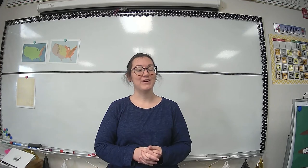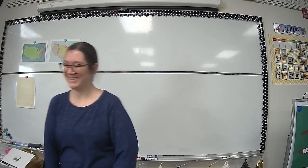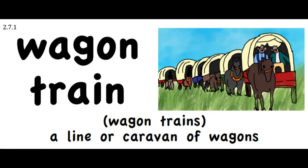Before we read our story today, we need to go over our vocabulary words. Campfire: an outdoor fire used for warmth or cooking. 'Nick and Anna gathered wood for the campfire so they could roast marshmallows.' Wagon train: a line or caravan of wagons. 'The wagon train moved slowly westward over the rough and rocky terrain.'